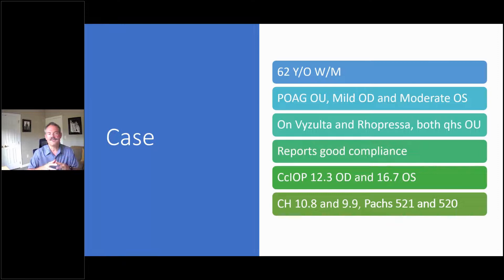We stage it as mild in the right eye and moderate in the left eye. Patient's on Visolta and Rhopressa, both at night. Patient reports good compliance. The corneal corrected IOP by the ORA is 12.3 in the right eye and 16.7 in the left.